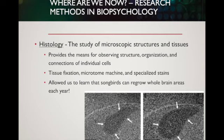Nowadays, our ability to understand brain function is far different than what we were working with 100 or 150 years ago. We can use techniques like histology, which allows us to use light microscopy to understand microscopic structures and tissues. It allows us to observe structure, organization, and how individual cells are actually connected to each other.